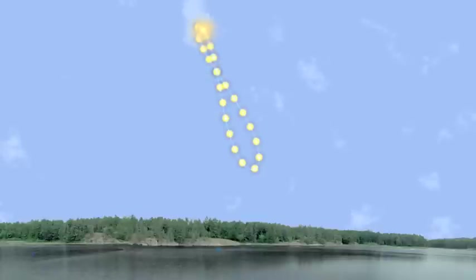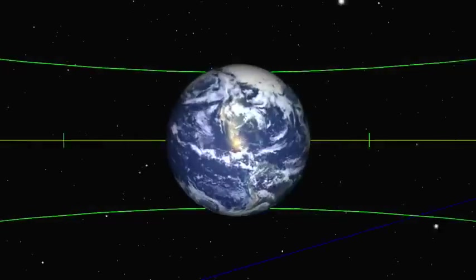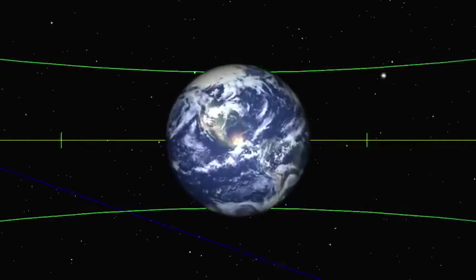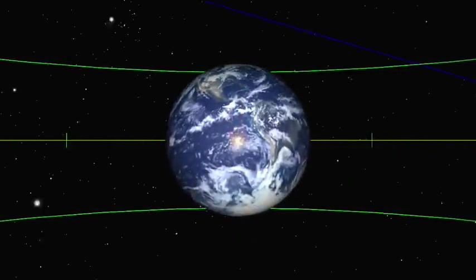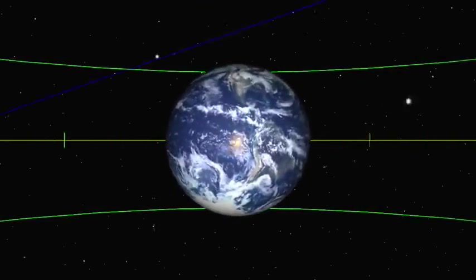When the Sun goes from one vernal equinox to the next, a tropical year has passed. Measuring this way gives a year that is 365 days, 5 hours, 48 minutes, and 46 seconds long.